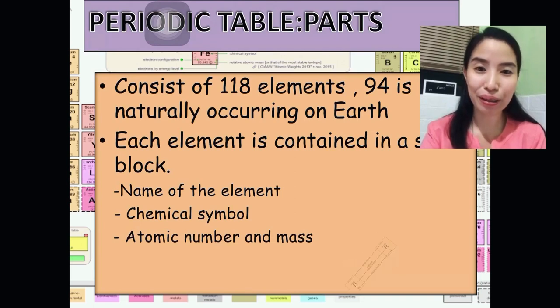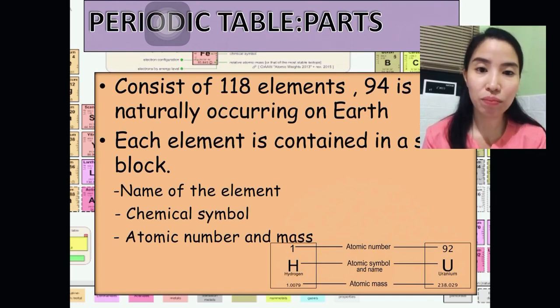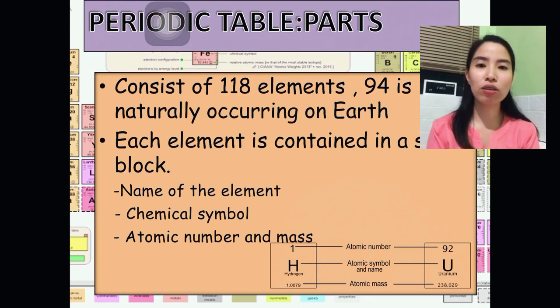For example, we have here the name of an element, hydrogen and uranium. Atomic number of hydrogen is 1. Atomic number of uranium is 92. Symbol for hydrogen is H or capital H and for uranium is capital U. And at the bottom, we can find the atomic mass. So, those are the information that you can find in each block of elements.